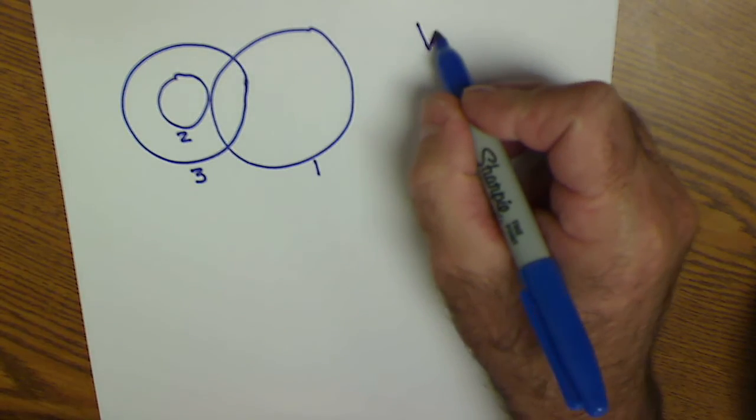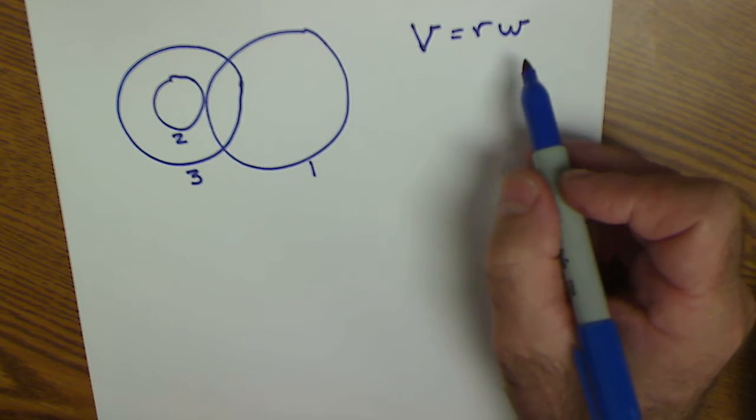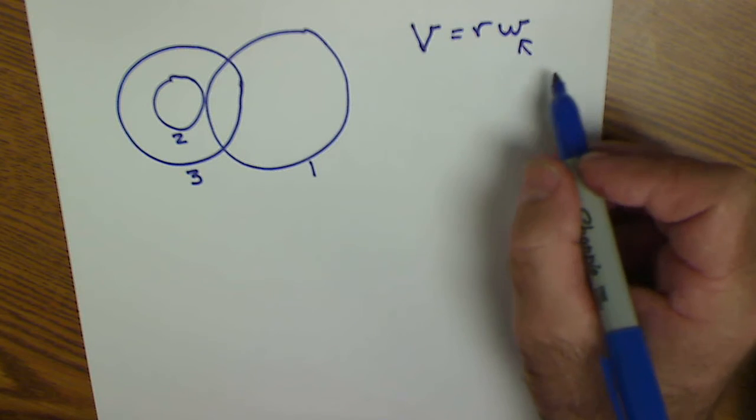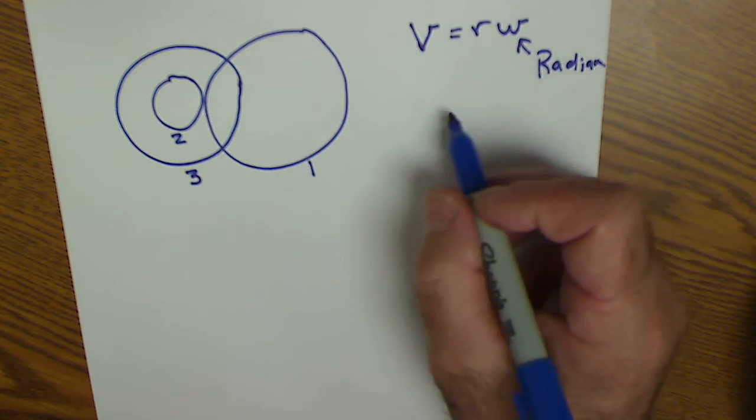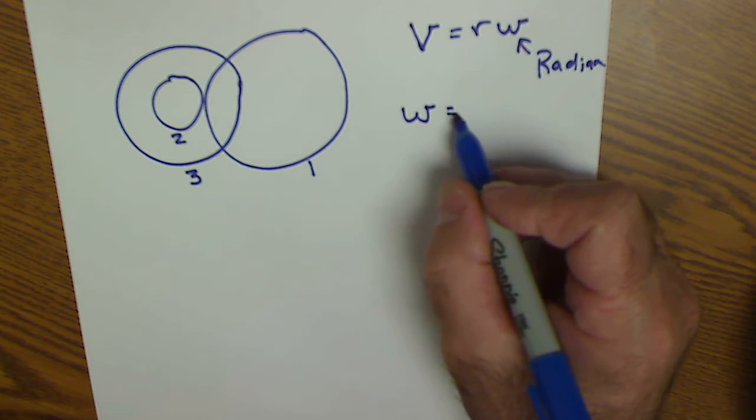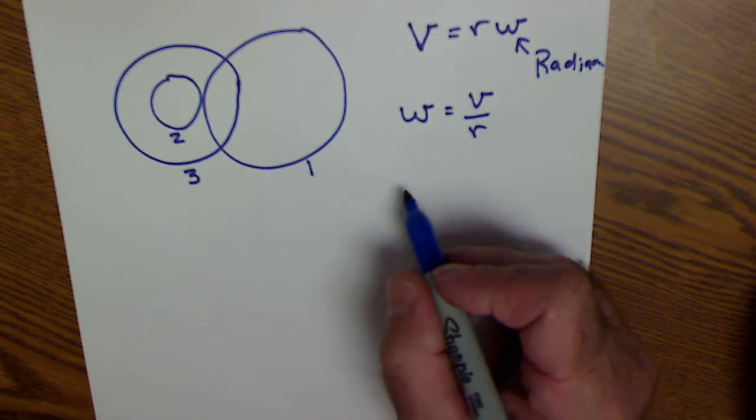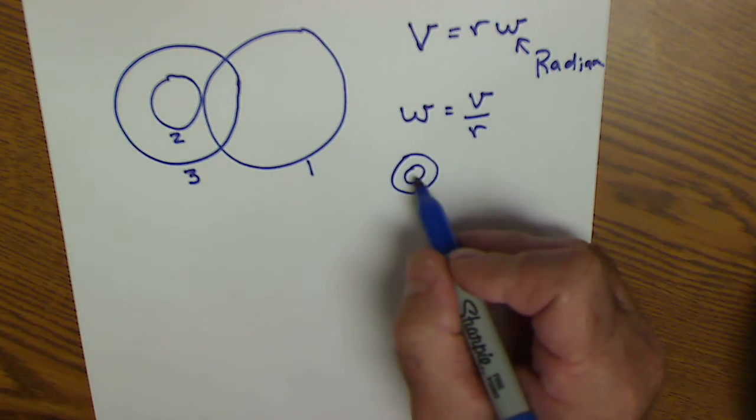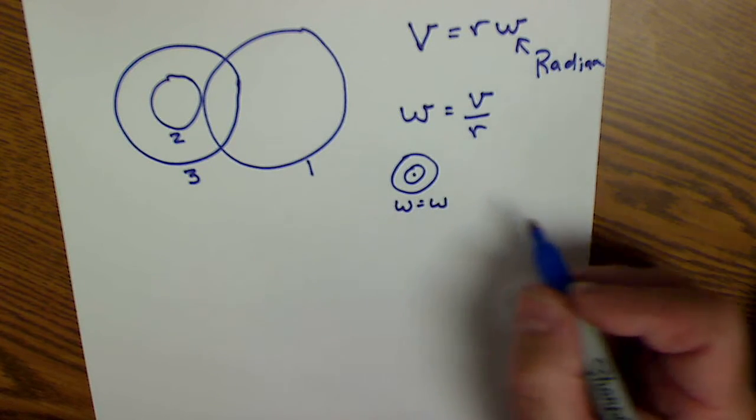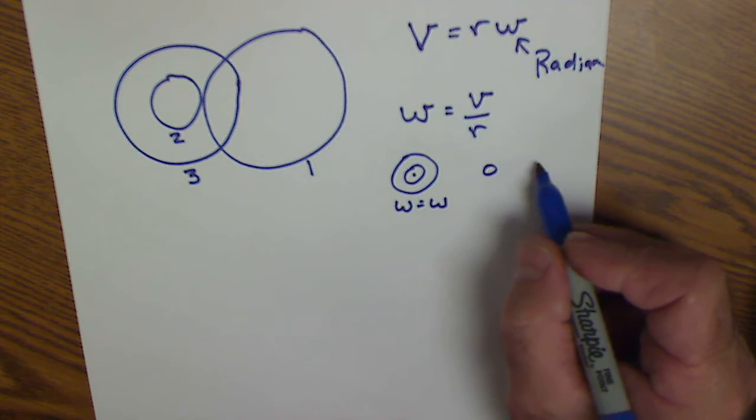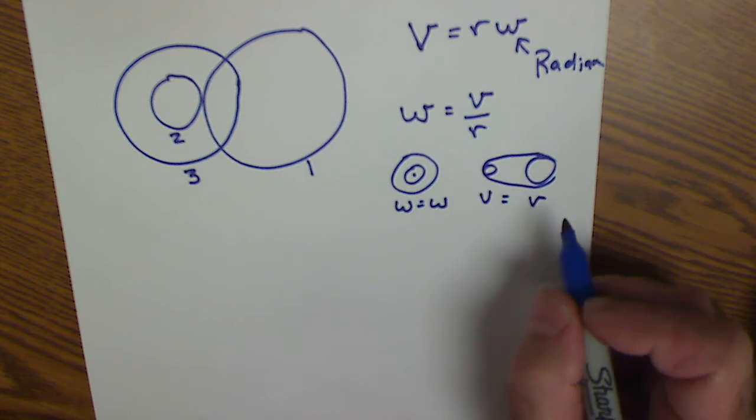The general equation is linear velocity equals radius times angular velocity. However, angular velocity has to be in radian measure. Or I could divide both sides by radius and see angular velocity is linear velocity divided by radius. A couple key concepts: if I have two gears with the same axle or center point, they have equal angular velocities. Or if I have two gears connected by a belt or a chain, they have equal linear velocities.